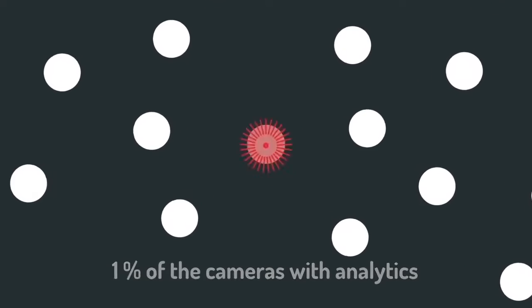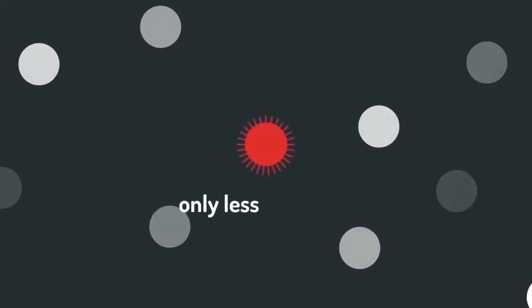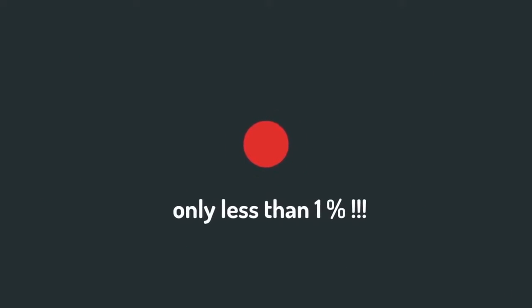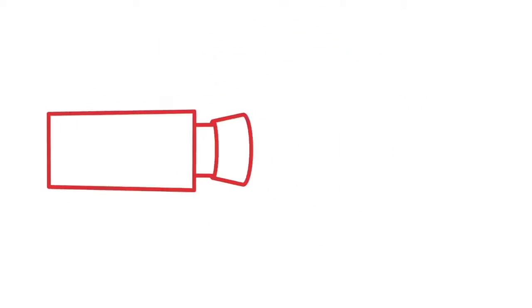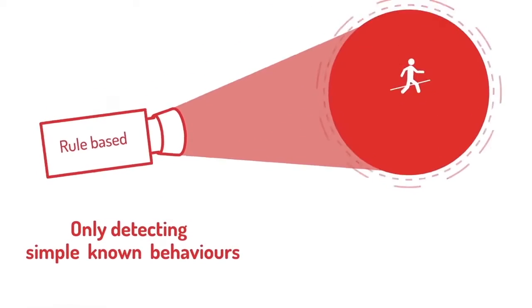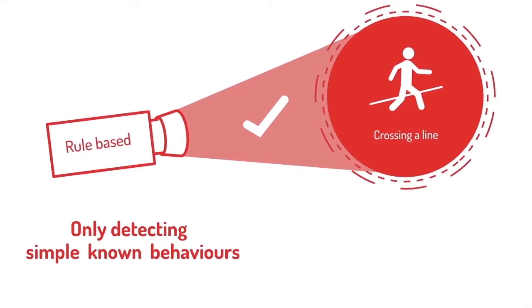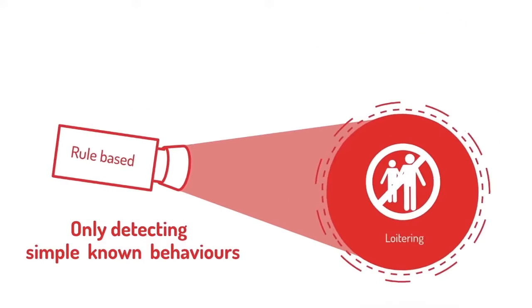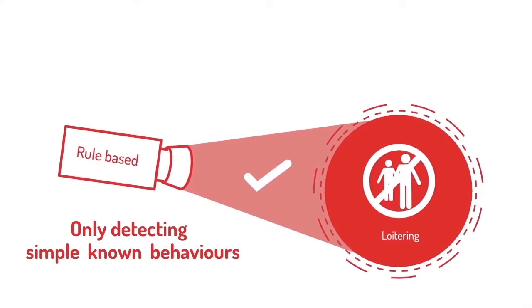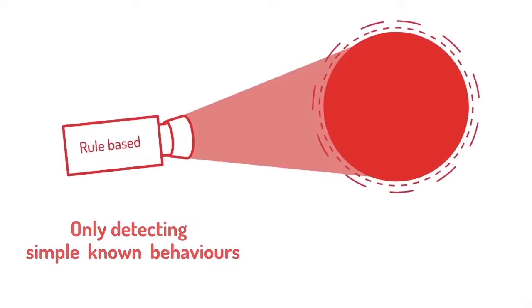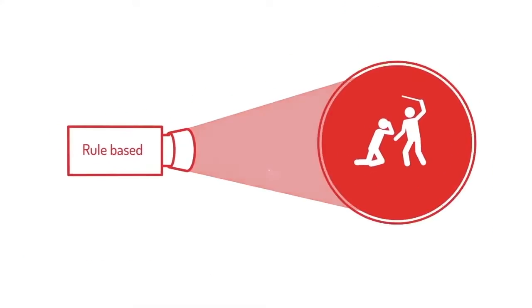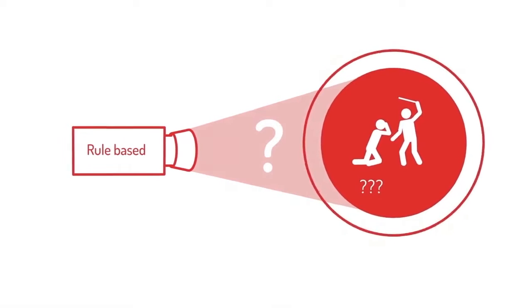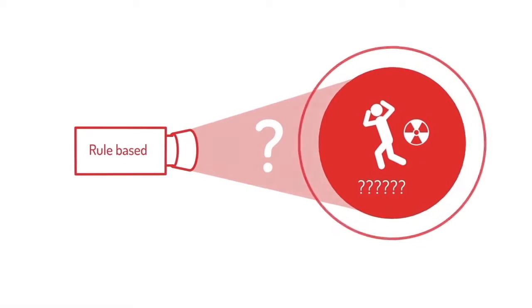True effectiveness is hence only less than 1%. Conventional, rule-based analytics detects only specific or known behaviors. Configuration of such rules is tedious and time-consuming. Furthermore, what about other unusual or complex scenarios not specified by any rules beforehand?